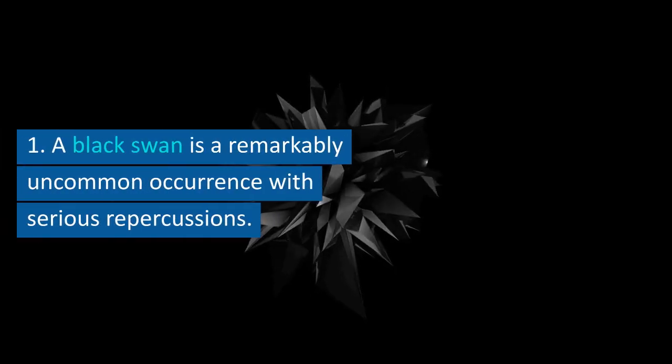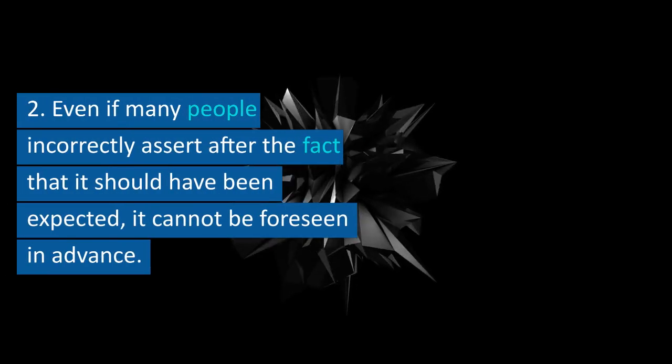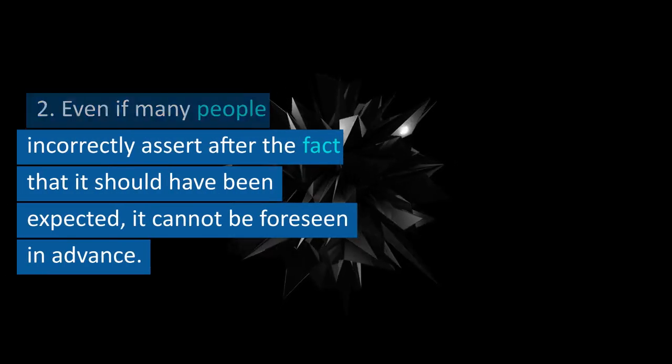Summary. 1. A black swan is a remarkably uncommon occurrence with serious repercussions. 2. Even if many people incorrectly assert after the fact that it should have been expected, it cannot be foreseen in advance.